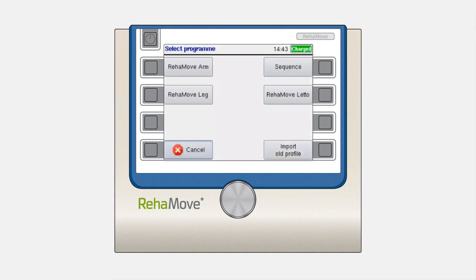To create a ReaMove Leto Leg training program, press the second button on the right. The next window will give you the opportunity to choose between Adaptive or Constant mode.